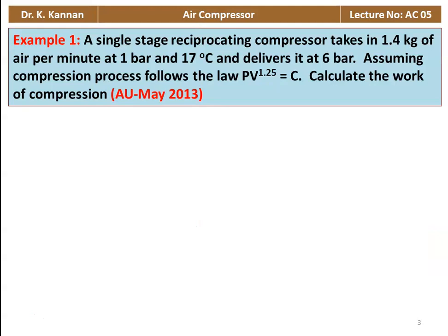Example number 1 from the Anna University question paper, May 2013. A single stage reciprocating compressor takes in 1.4 kg of air per minute at 1 bar and 17 degrees Celsius and delivers it at 6 bar. Assuming the compression process follows the law PV^1.25 = constant, calculate the work of compression.